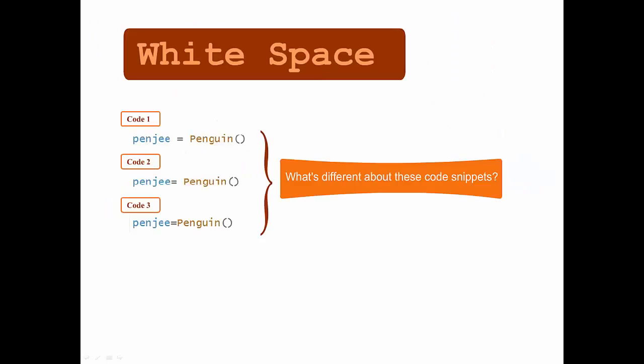So what's different about these three snippets of code? As you see, each one says Penji equals penguin. Well, it's the spacing in between the words, or the white space in between two characters.